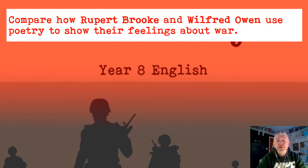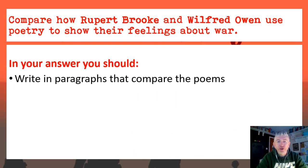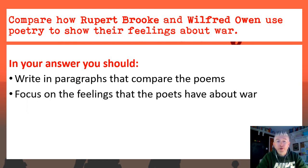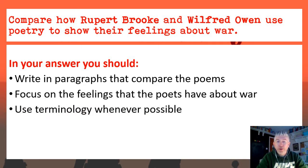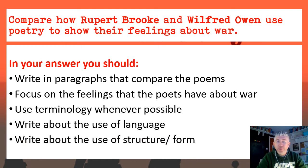Here is the question: 'Compare how Rupert Brooke and Wilfred Owen use poetry to show their feelings about war.' In your answer you should: write in paragraphs that compare the poems; focus on the feelings that the poets have about war; use terminology whenever possible; write about use of language; write about use of structure and form. That is your personal checklist.